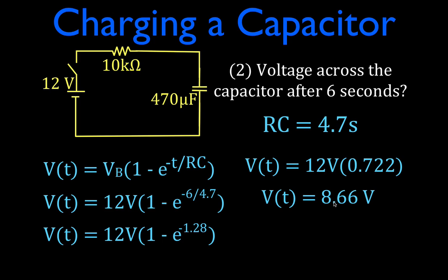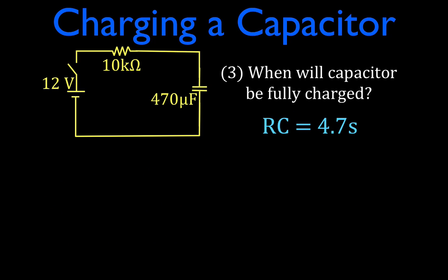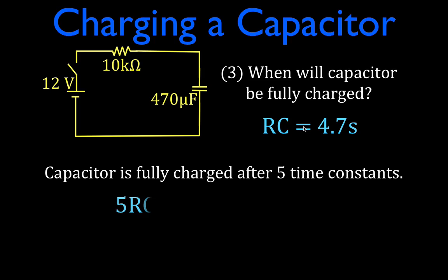Both approaches — using time constants or actual time — use the same equation. Now, when will the capacitor be fully charged? It's generally accepted that a capacitor is fully charged after five time constants, since at that point it reaches 99.3% of the maximum voltage, which is considered fully charged. Multiplying five times the time constant: 5 times 4.7 seconds means the capacitor will be fully charged after 23.5 seconds.